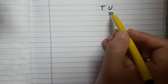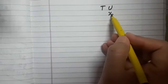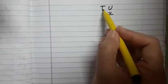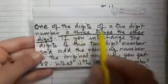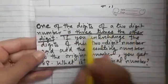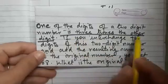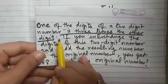But here right now we are taking digit at unit place be x. So what will be the digit at the tens place? Yes, it will be equal to 3x because in this question it is given that one of the digits of a two-digit number is three times the other digit. Now if this is the number, then how we will express it mathematically?